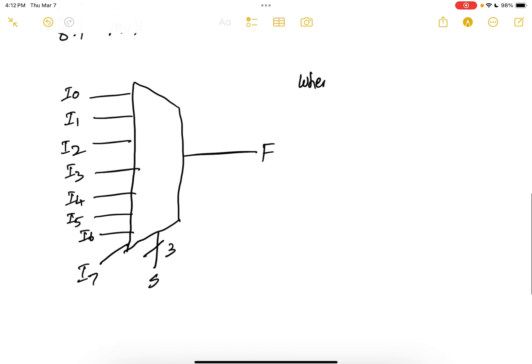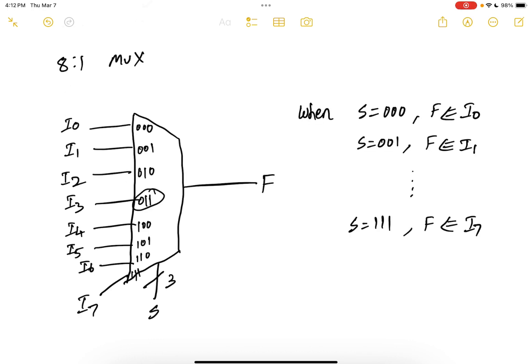So this is port 000, 001, 010, 011, 100, 101, 110 and 111. So for example, when S is 011, your F is equal to I3. So when S is 000, F is I0. When S is 001, F is I1 and so on. When S is 111, F is I7. So this is an 8 to 1 MUX.